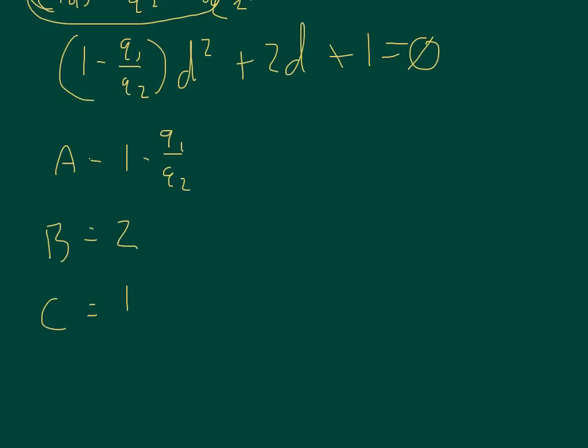Now remember the quadratic formula where X is equal to negative B plus or minus the square root of B squared minus 4AC divided by 2 times A. You notice the plus or minus means that there's two possible answers. Since we wanted the value to the left of a specific charge, we're going to use the minus as our answer, but the other answer would be to the right of the 6 microcoulomb charge.